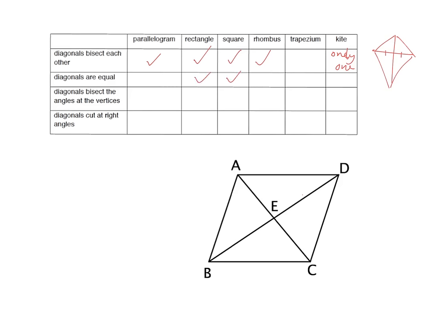The diagonals bisecting the angles at the vertices only happens when you've got equal sides, so that happens for your square and your rhombus. And also remember for your kite, these two angles were equal and those two there were equal, but it doesn't hold for the other angles in the kite. The diagonals crossing at 90 degrees — the kite was a special case, and of course the square and the rhombus.